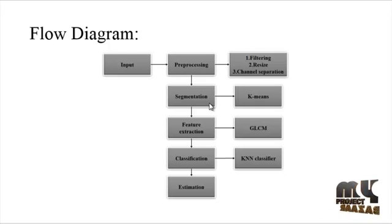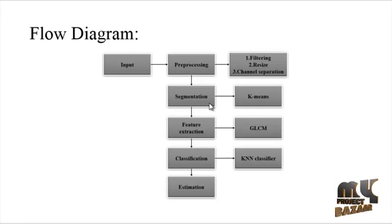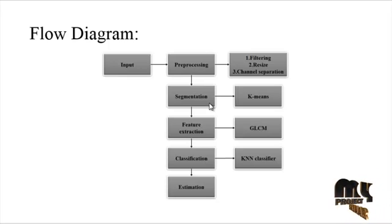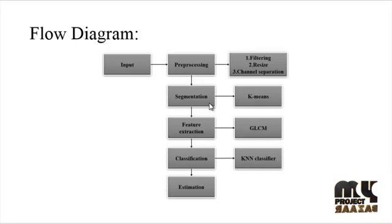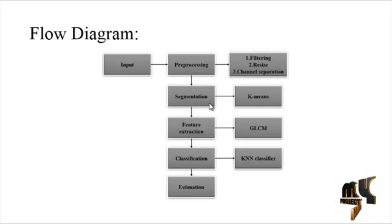In the segmentation process, the k-means algorithm is applied to segment the fruit image for classification. Features are then extracted from the segmented image using the gray level co-occurrence matrix (GLCM). In the classification step, either the k-NN classifier or neural network classifier is used to identify the fruit — for example, apple or orange.